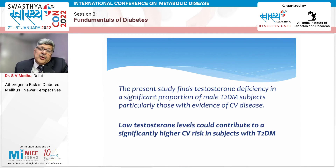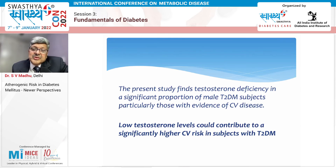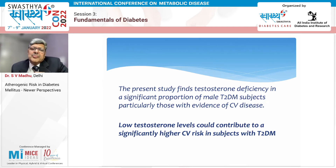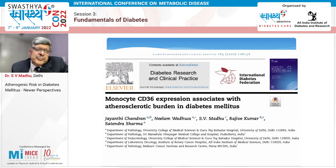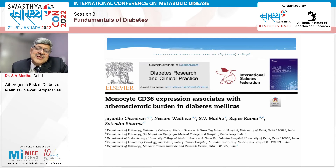We found testosterone deficiency in a significant proportion of male type 2 diabetic subjects, particularly those with evidence of cardiovascular disease. Low testosterone levels could contribute to significantly higher CV risk in subjects with type 2 diabetes, given that nearly one third actually have low testosterone. In addition to lipids and conventional factors, low testosterone is an area to watch, control, or treat to reduce the cardiovascular disease burden among diabetic subjects.